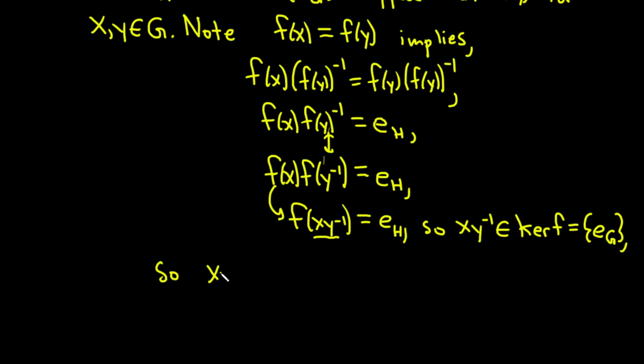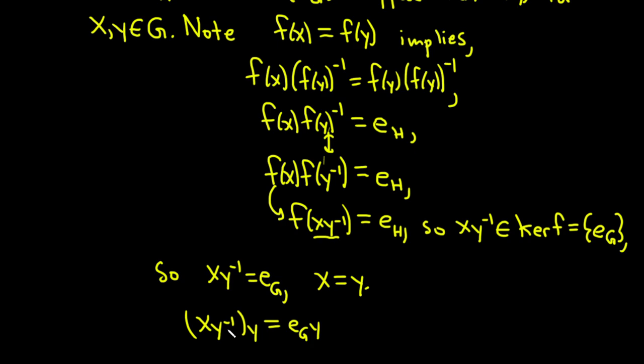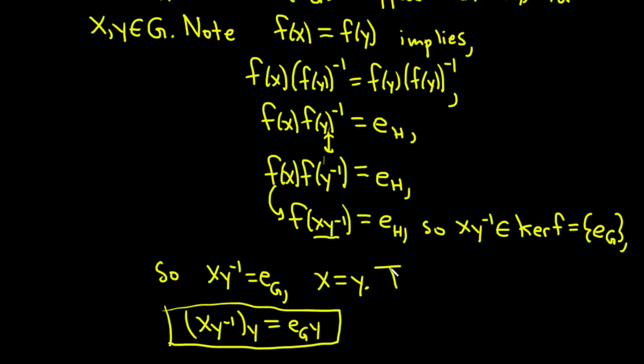So x · y^{-1} must equal the identity element in G — that's the coolest part of the proof. Then you multiply on the right on both sides by y, giving x · y^{-1} · y equals e_G · y. By associativity, the y^{-1} · y cancels, leaving just x on the left, and e_G · y is just y on the right. So x equals y.